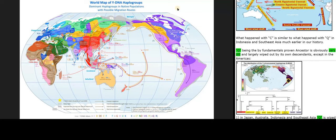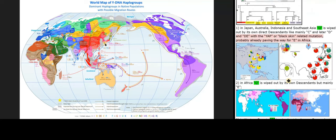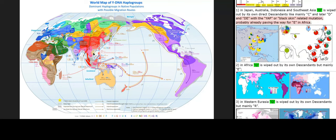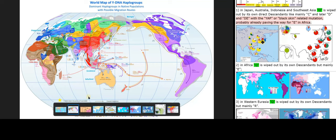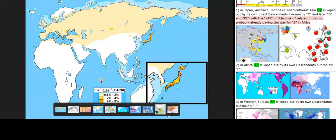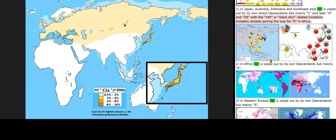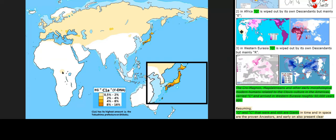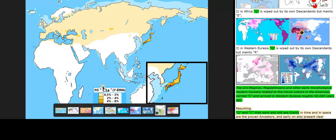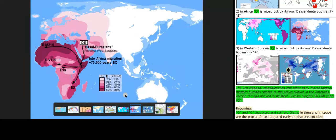C, being the bi-fundamentals proven ancestor, is obviously very old and largely wiped out by its own descendants, except in the Americas. In Japan, Australia, Indonesia and Southeast Asia, C is wiped out by its own direct descendants — mainly C and later D and DE — with the YAP or black skin-related mutation, probably already paving the way for E in Africa. In Africa, Q is wiped out by its own descendants but mainly E. In Western Eurasia, Q is wiped out by its own descendants but mainly R.